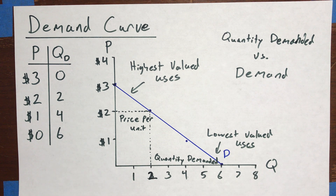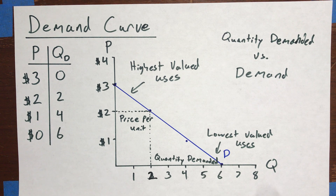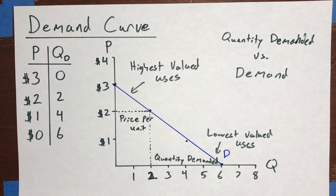In the next video, we're going to talk about how we can use demand to organize our thinking about the amount by which consumers are made better off when they make purchases — which is also known as consumer surplus.